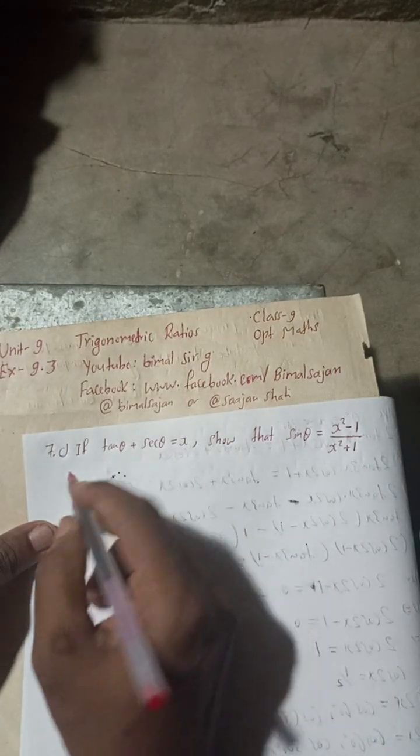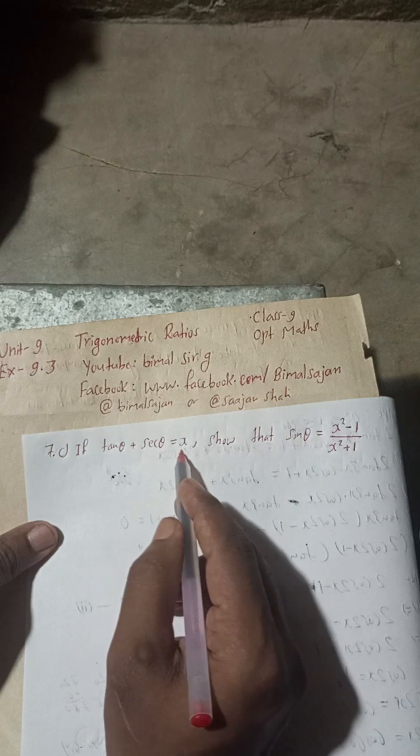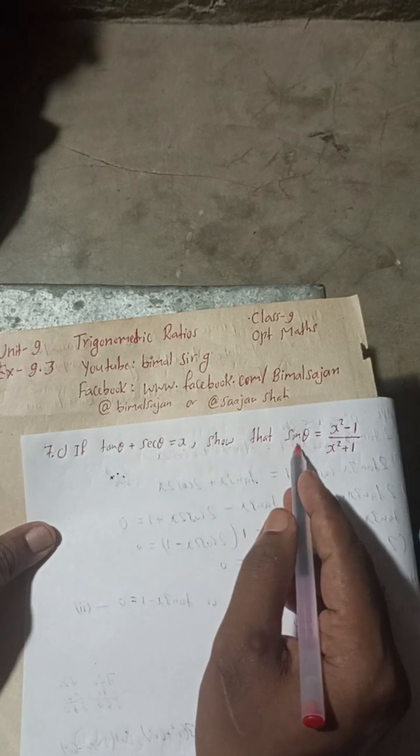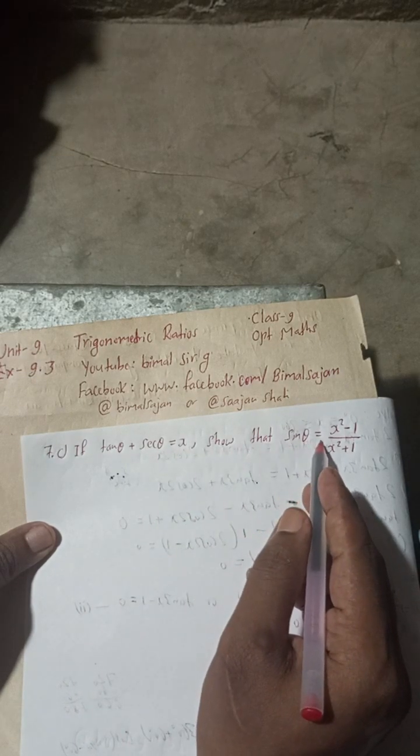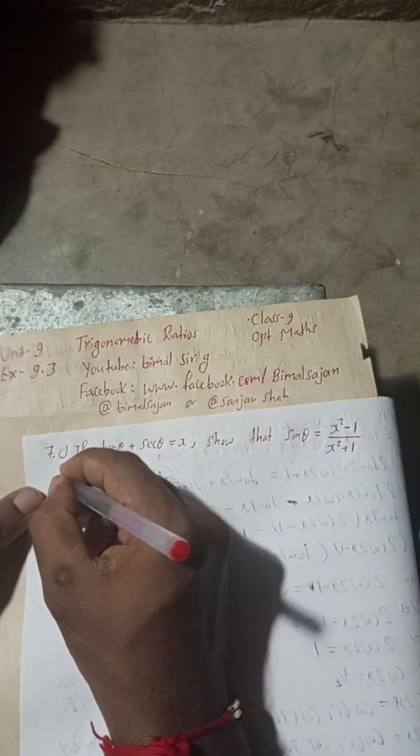Let's begin the solution. Question 7c: if tan θ + sec θ = x, show that sin θ = (x² - 1) / (x² + 1).